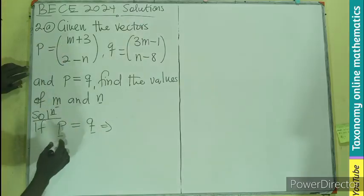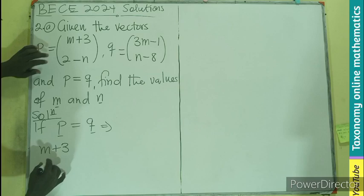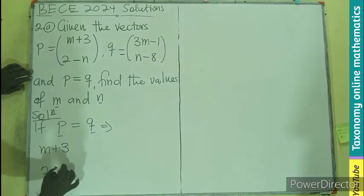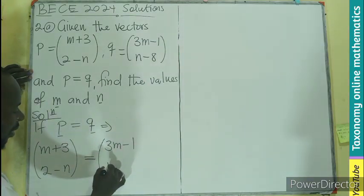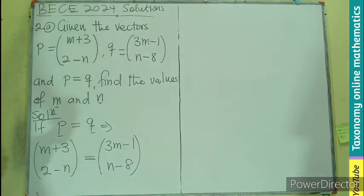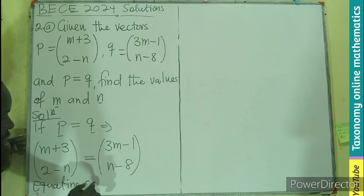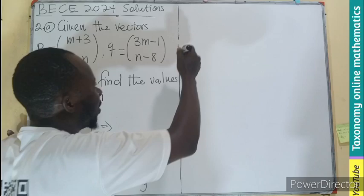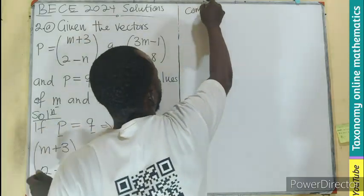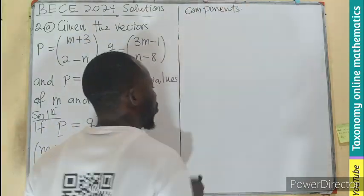M plus 3, 2 minus N for P should be equal to 3M minus 1, N minus 8. This is what it means, the equality of vectors. So we are going to compare or equate. So equating corresponding component.